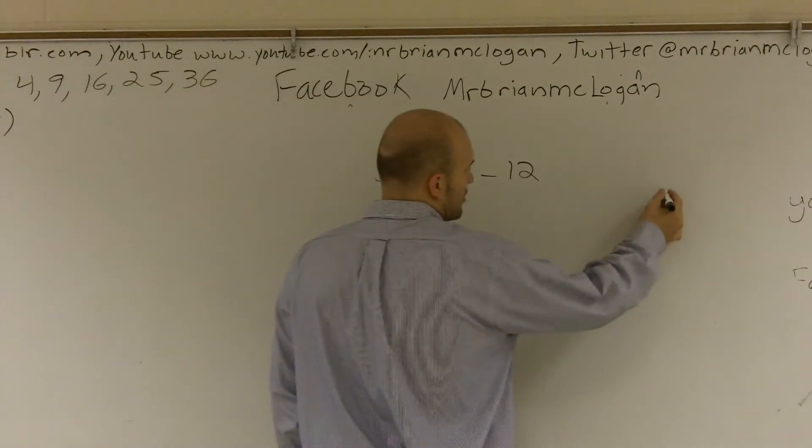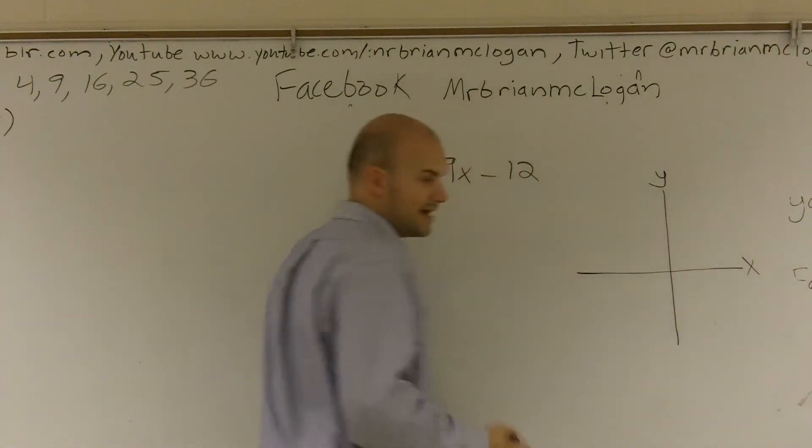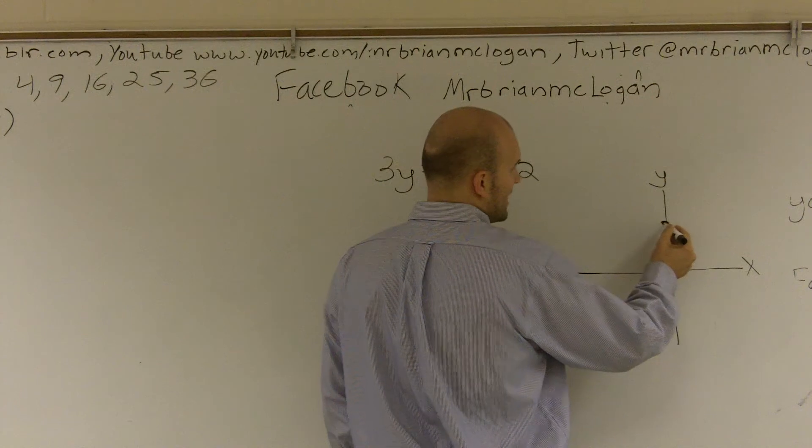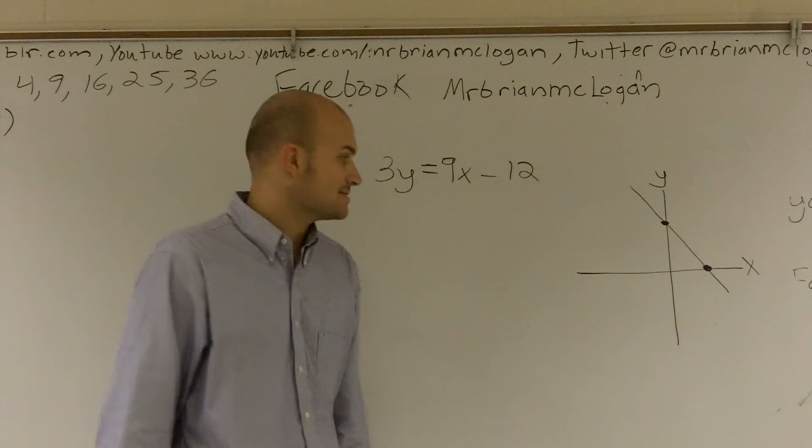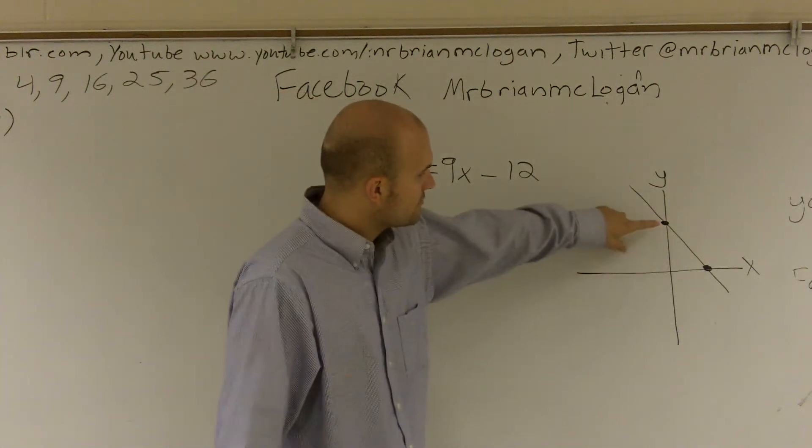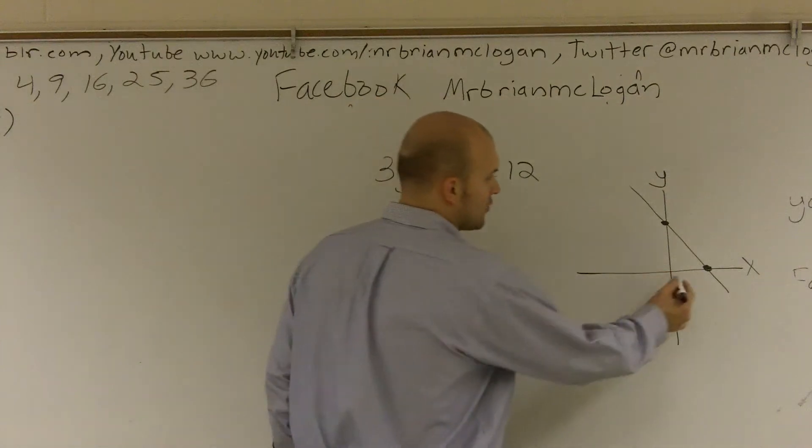One thing we need to know about x and y intercepts is if I look at a graph, I have an x and a y axis. Well, an intercept, if you remember, is where a line crosses each axis. So if you notice, where it crosses the y axis is right - if here's our origin, right, our origin is what we call zero, zero.